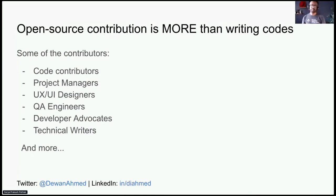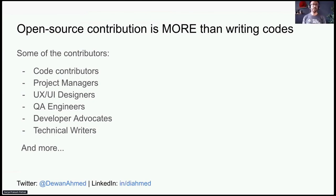Open source contribution is more than writing code. Open source communities consist of code contributors, project managers, UX/UI designers, QA engineers, developer advocates, technical writers, and more. It's important to understand all these different roles because combined, we succeed. If you're a non-code contributor, your contribution is just as valuable. Whether you're a junior UX/UI designer or a developer advocate, you can help open source projects just as much as a software developer. Writing a blog or creating a video to promote a project also counts as contribution.